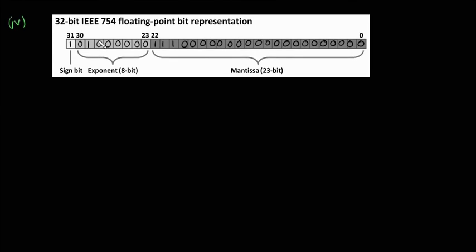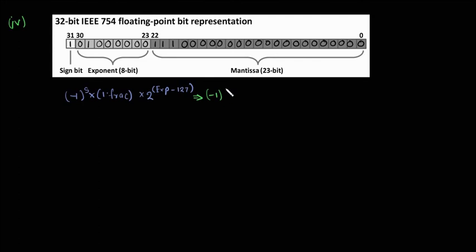Now let us move to another example — converting this floating-point representation to decimal. We write the notation minus 1 power s times 1.fraction times 2 power (exponent minus 127). The s value is 1, so this is a negative number. The fraction is 1111111100 followed by zeros.